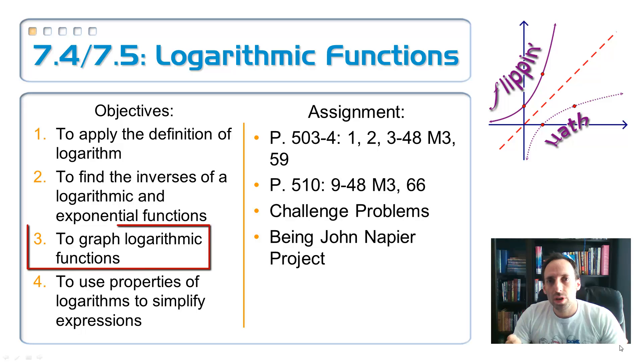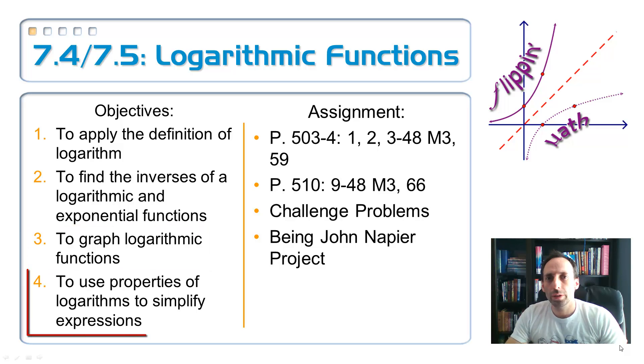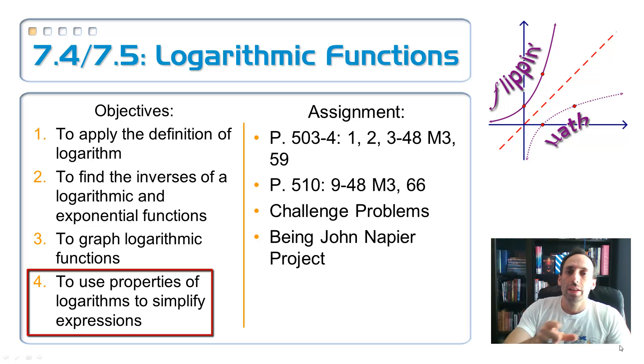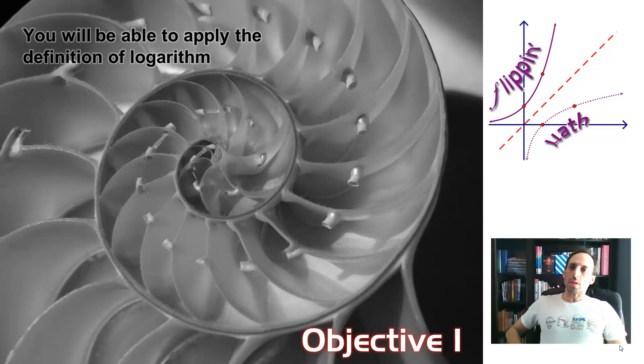So we're applying this definition of a logarithm, whatever the heck that thing is, and finding the inverses of logarithmic functions and exponential functions. Those two things are tied together. Objective 3 is graphing logarithmic functions. That's what algebra is all about - you solve equations, you graph them. And then finally, use properties of logarithms to simplify expressions. As a matter of fact, that fourth objective is pretty much what your project's about, that being the John Napier project, which you'll have very soon.